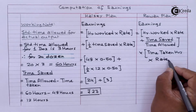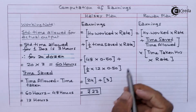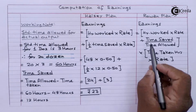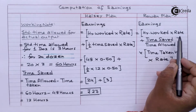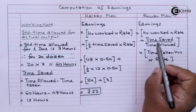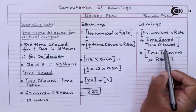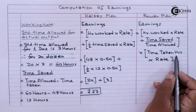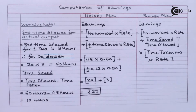Under the Rowan plan, to calculate total earnings the formula is: hours worked multiplied by rate, plus time saved divided by time allowed, into time taken hours multiplied by rate.